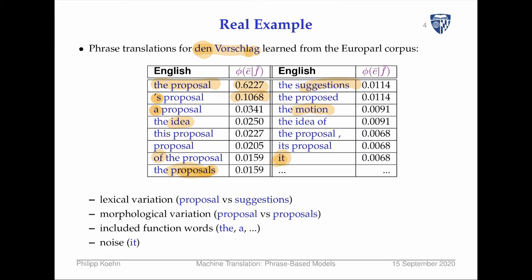So you actually have a difference in what information is in the German sentence versus the English sentence, which makes sense in context. There might be a good reason why in one language you use a pronoun while in the other you don't. But it does create a problem for our phrase translation. On the other hand, this is in the tail end, and the advantage of statistical models is that this long tail really doesn't matter all that much.